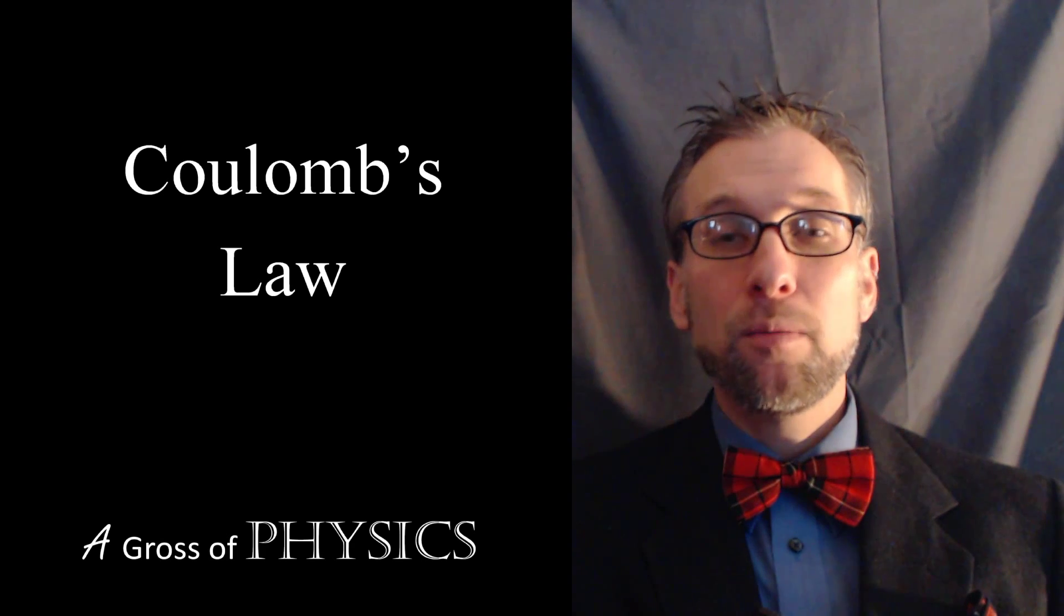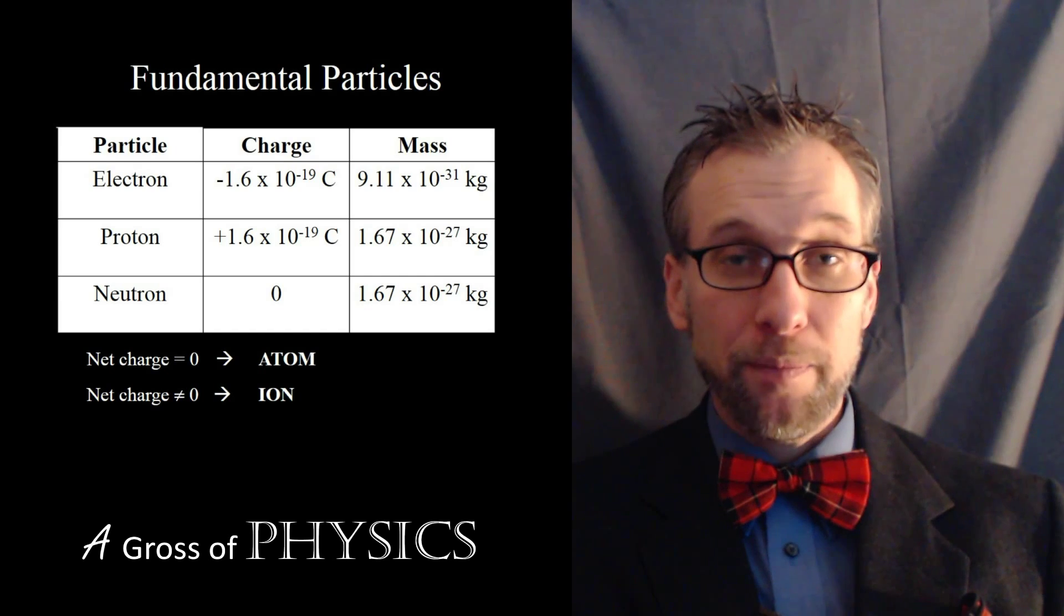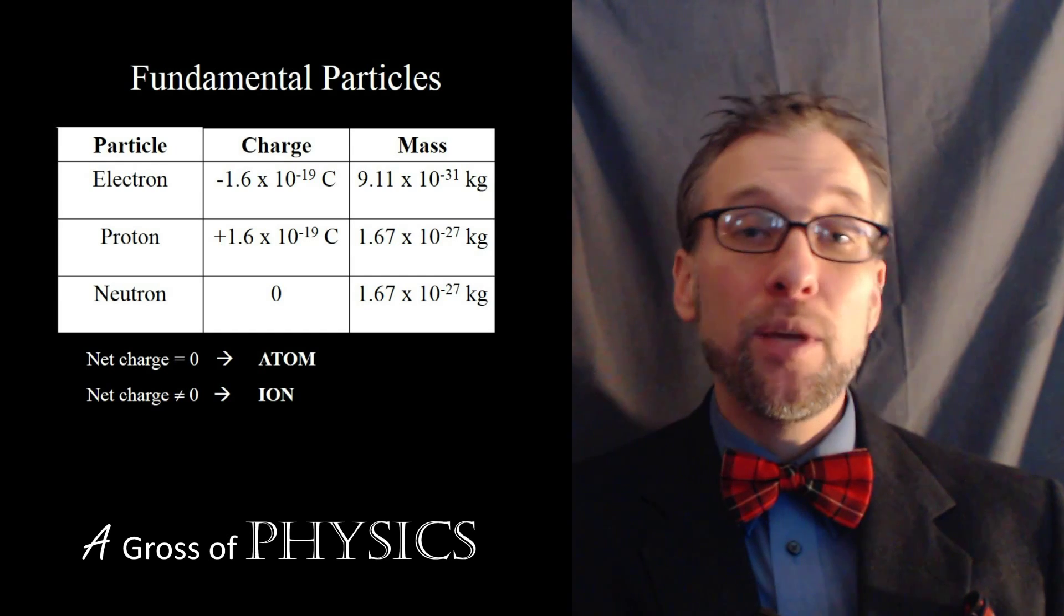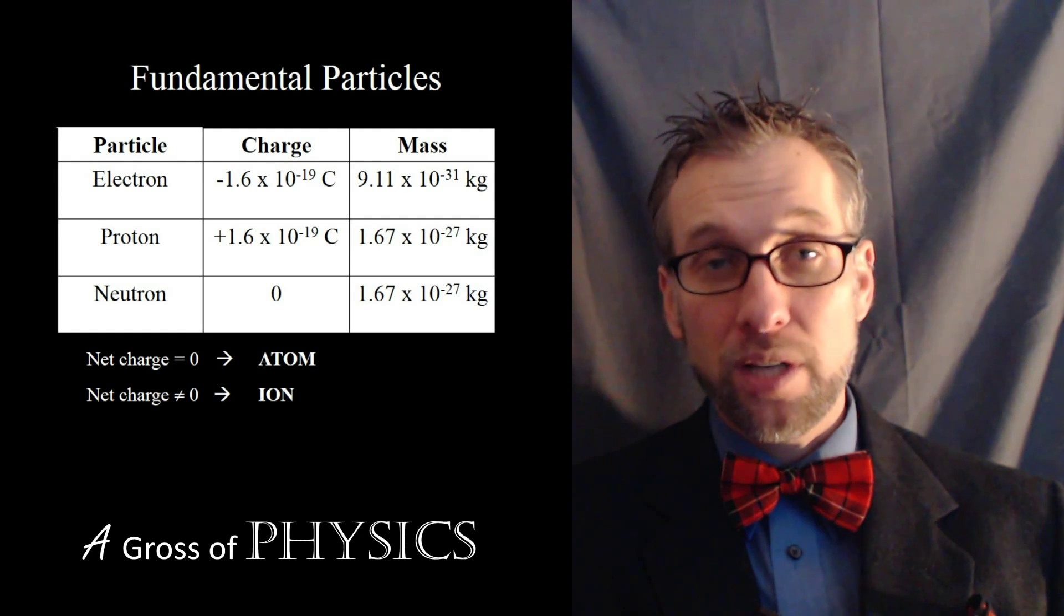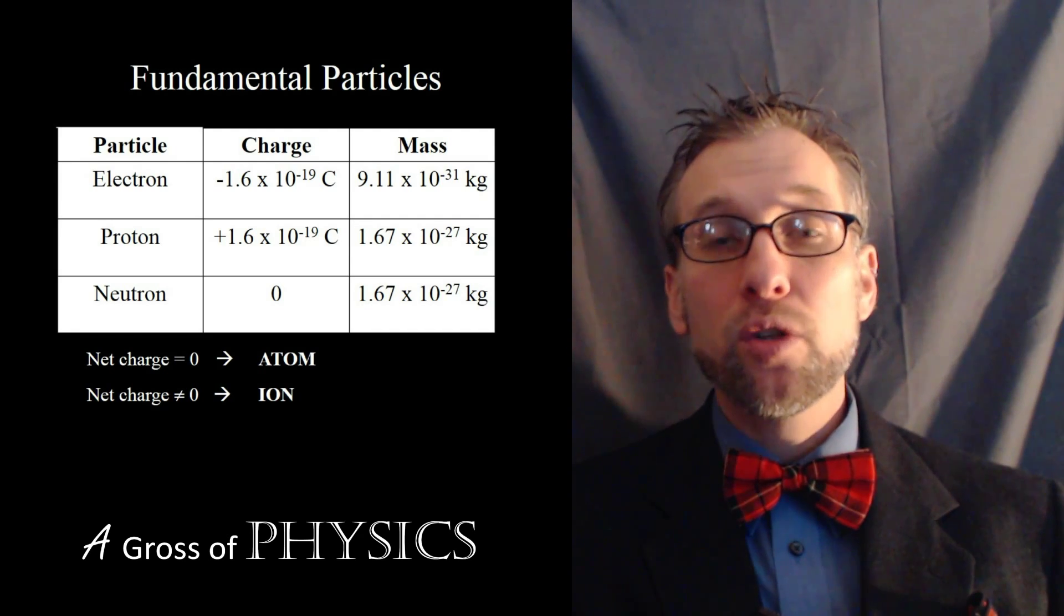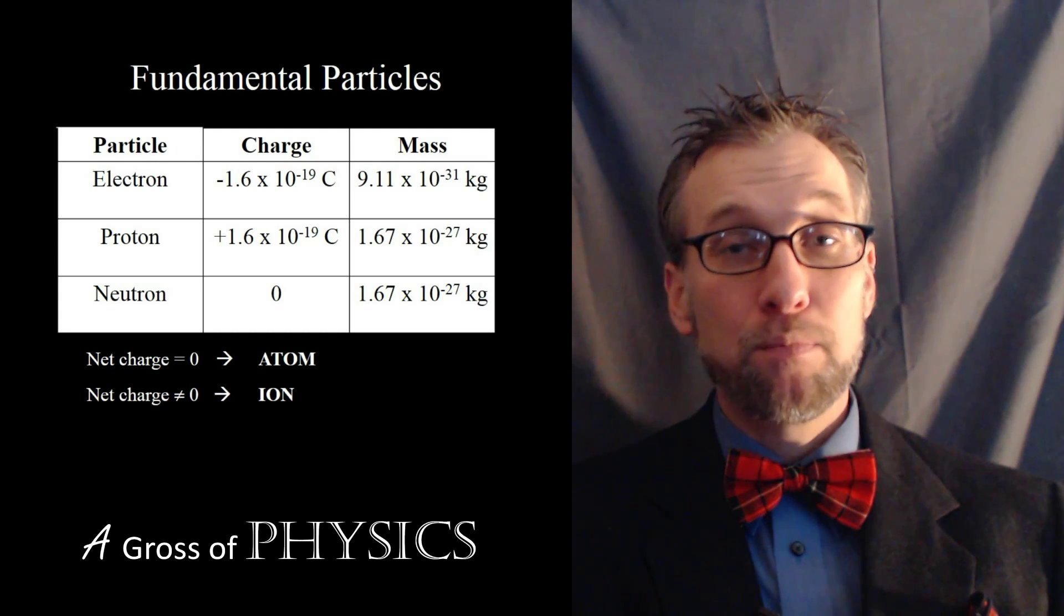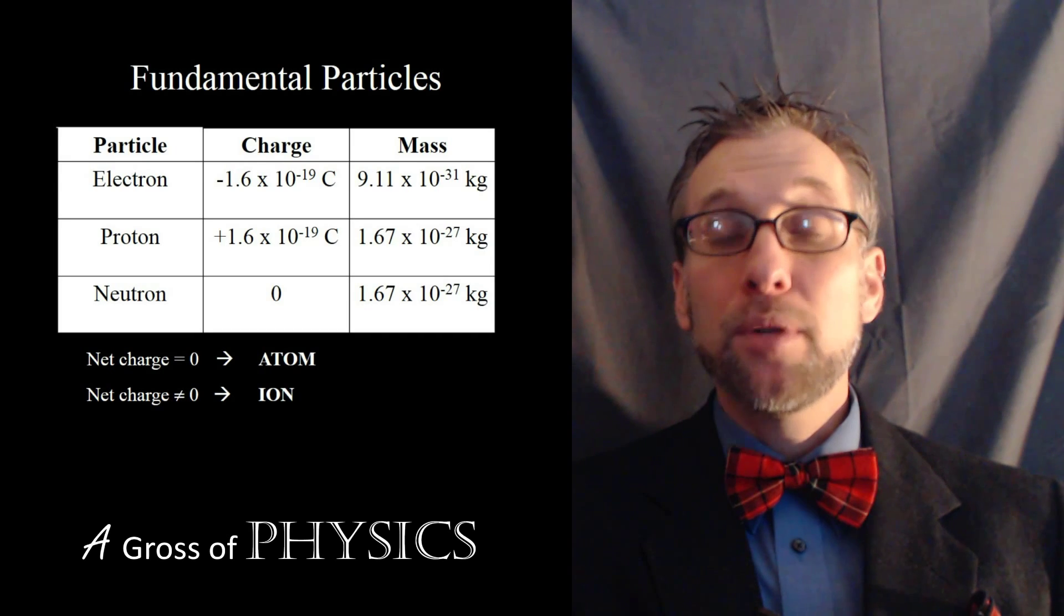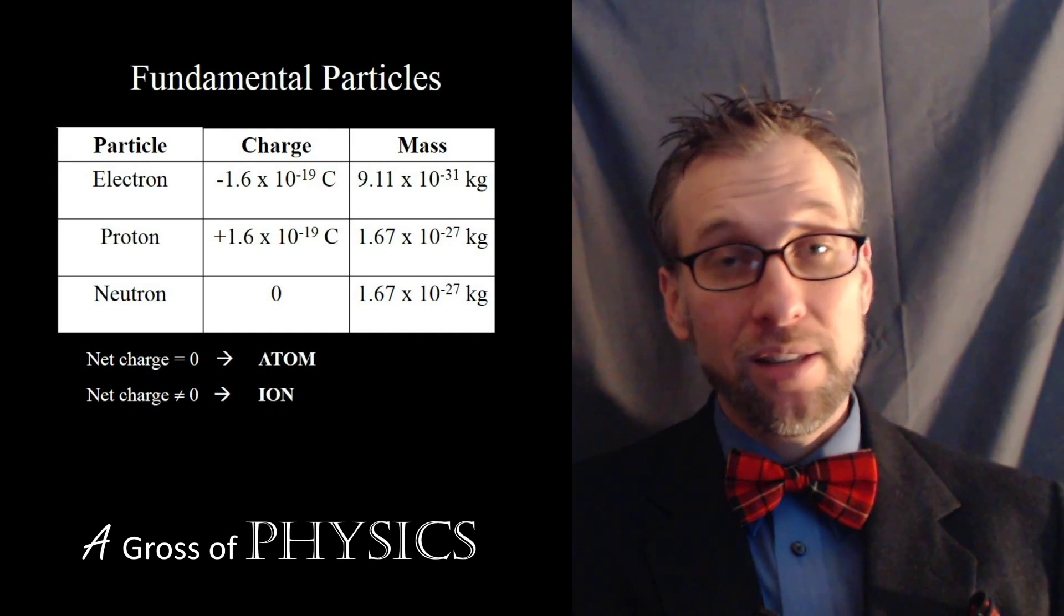Remember we have three fundamental particles in the atom: the electron, the neutron, and the proton. In chemistry we use plus one to denote the charge of the proton, minus one for the electron, and they're equal. We also use plus one for the mass of the proton, plus one for the mass of the neutron, and zero for the mass of the electron.